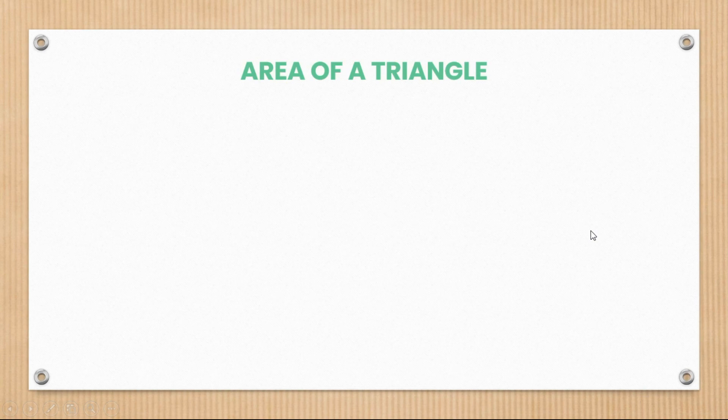Hi everyone and welcome to video number nine of the topic of trigonometry. Today we're going to be dealing with how to use trigonometry to find the area of a triangle. Before today, you may have known how to find the area of a triangle as area equals a half times base times height. Trigonometry can actually help us find the area of a triangle — let's find out how.